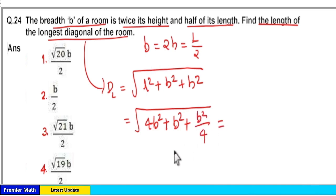Now this will be equal to 5B square plus B square by 4. So this is equal to 4 into 5 is 20.